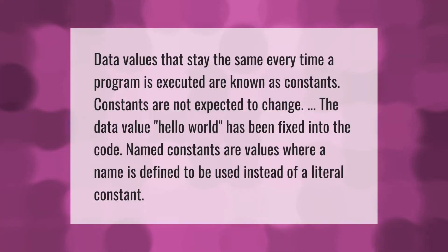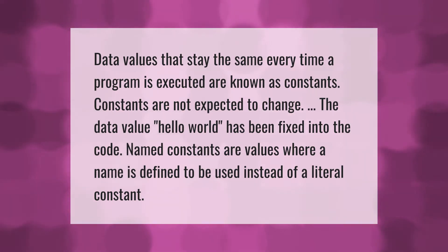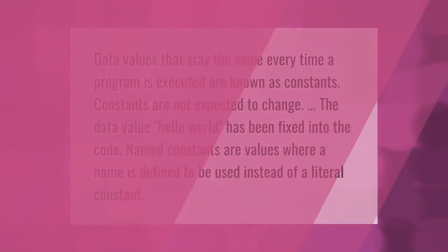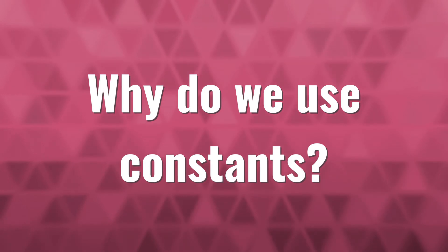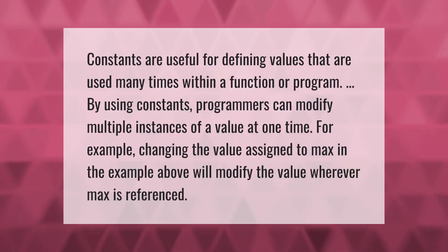Data values that stay the same every time a program is executed are known as constants. Constants are not expected to change. The data value "hello world" has been fixed into the code. Named constants are values where a name is defined to be used instead of a literal constant.